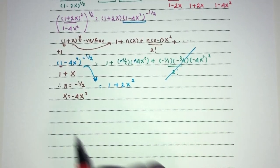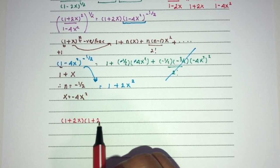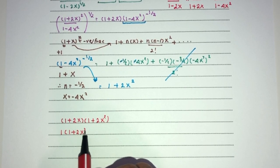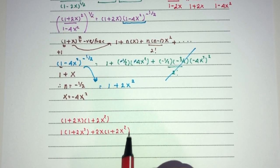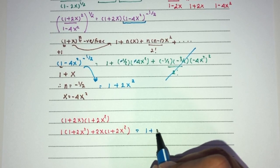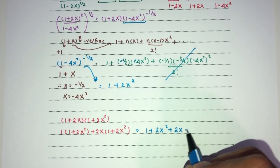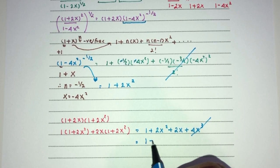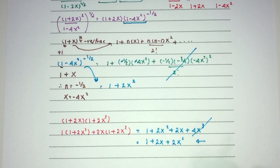So finally we just have to expand (1+2x) times (1+2x squared). This is 1 times (1+2x squared) plus 2x times (1+2x squared). Expanding: the first part gives (1+2x squared), and 2x times this gives 2x plus 4x cubed — but we don't need the cubic term. So the answer will be 1 plus 2x plus 2x squared, which is your answer for question number two.